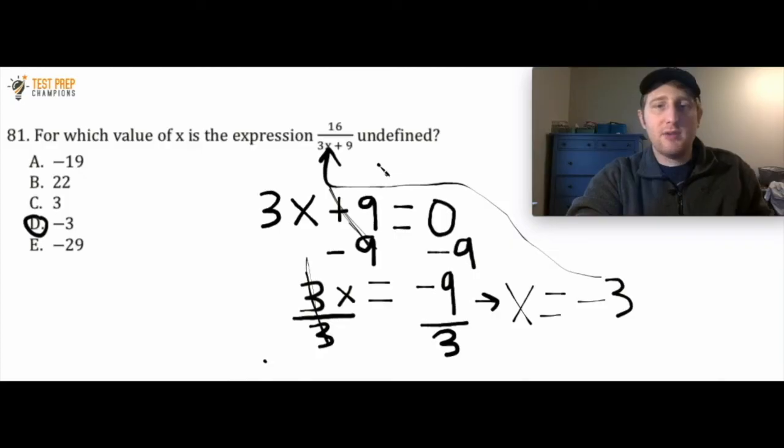So you can never divide by 0 and all we did was we took this 3x plus 9, we set this equal to 0. We solved it for x and we saw that when x equals negative 3 that value is going to make the expression undefined.